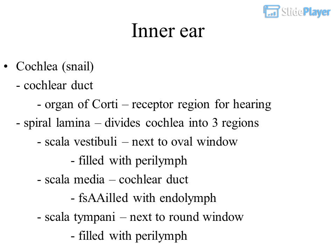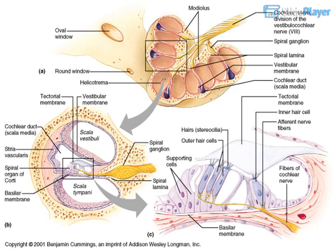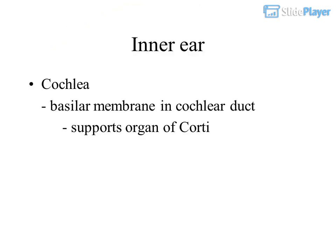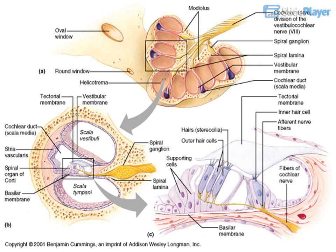The third region is the scala tympani, next to the round window. The basilar membrane in the cochlear duct supports the organ of Corti.